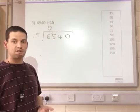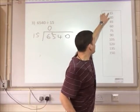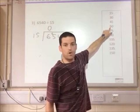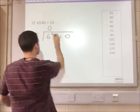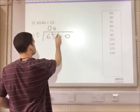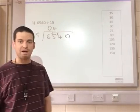How many times does 15 go into 65? One, two, three, four. That gets me to 60 with a remainder of five.